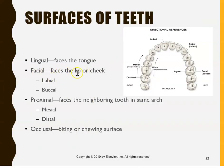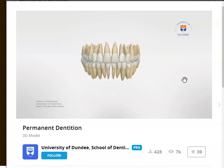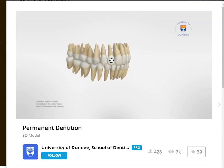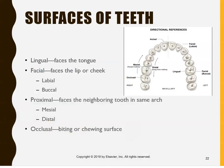Facial surfaces are the ones that face the lip or the cheek — the outside. Using this 3D image, all of this is considered facial: 1-1 facial, 1-2 facial, 1-3 facial, 1-4 facial, 1-5 facial, all the way to 1-8 facial. The way we write this down: 1-4 F for facial, or 1-4 L for lingual. The first letter is the short way of saying lingual or facial.